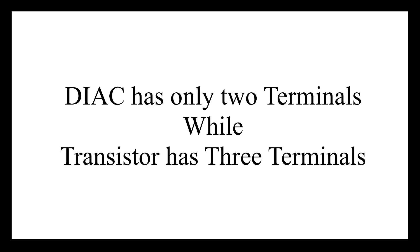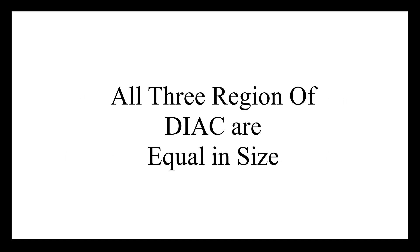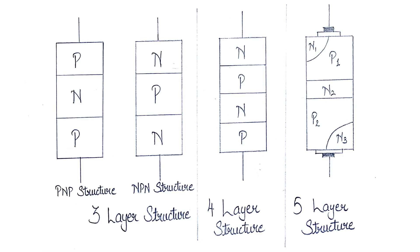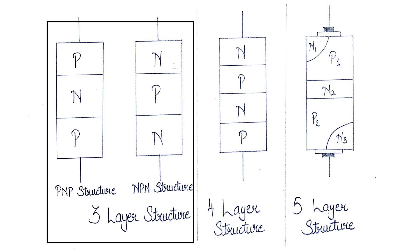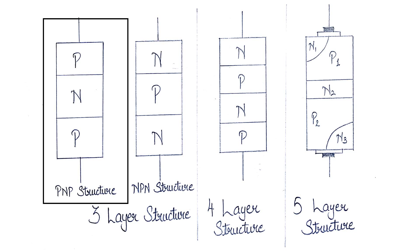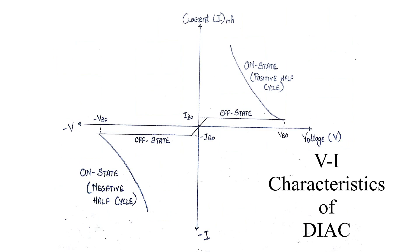A transistor is a three terminal device whereas the DIAC is a two terminal device. The three regions in DIAC are equal in size. The DIAC can be fabricated into three, four, or five layer structures, with the three layer structure being most commonly used. The three layer DIAC can be constructed in either PNP or NPN structure. In PNP form, two terminals are connected to the outer silicon P regions separated by an N region, making it the same as a PNP transistor with no base connection.